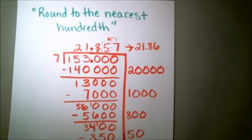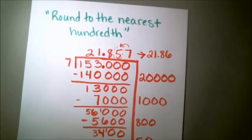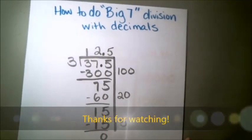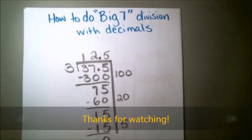So there you go. That's how to use the Big 7 method with decimals. If you have any questions for me or want to see another example, please let me know. Thanks!